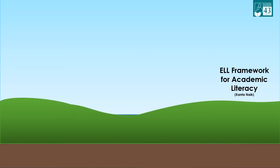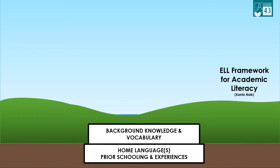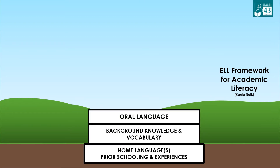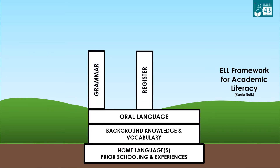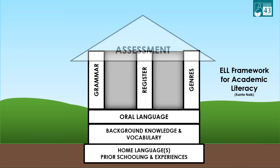But where does this fit in our ELL framework for academic literacy? Let's take a look at our house graphic and find out. The foundational piece is always getting to know our students — their home language, their prior schooling, their experiences. We build on that with background knowledge and vocabulary instruction. Oral language is also very important as a foundational piece. And we have our pillars: register, grammar, and genre. And finally, no house is complete without the roof — assessment.